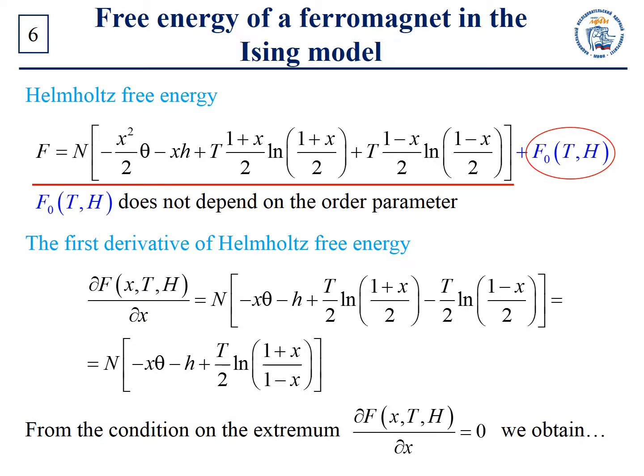Let us find it as a function of temperature and magnetic field only. To do this, we should find the order parameter as a function of temperature and magnetic field from the condition of free energy minimum at constant T and constant H. So let us find dF/dx, considering that dF₀/dx is equal to zero. From the condition on the extremum, we obtain the following equation.